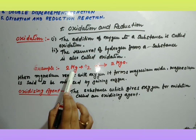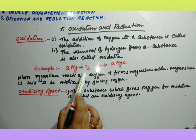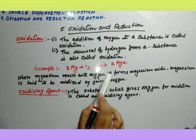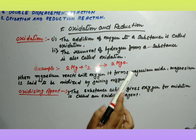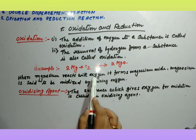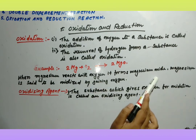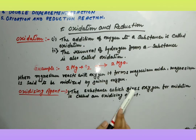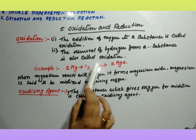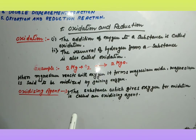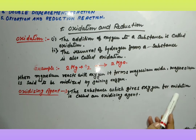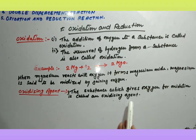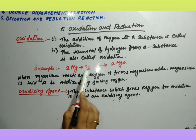Oxidizing agent क्या होता है? The substance which gives oxygen for oxidation is called oxidizing agent. In this reaction, oxygen is the oxidizing agent — it provides oxygen to magnesium for the oxidation process.